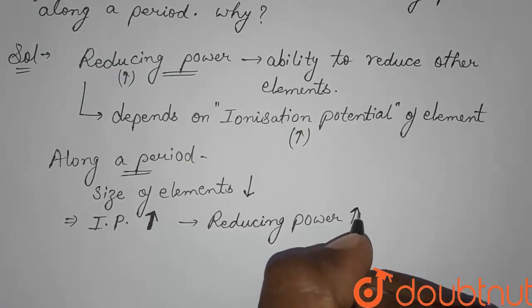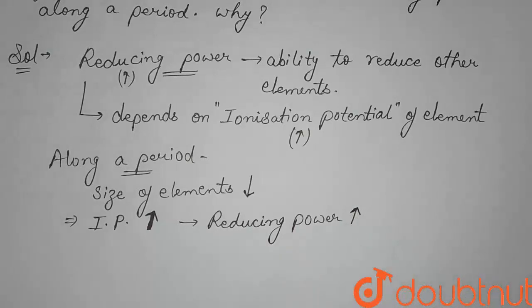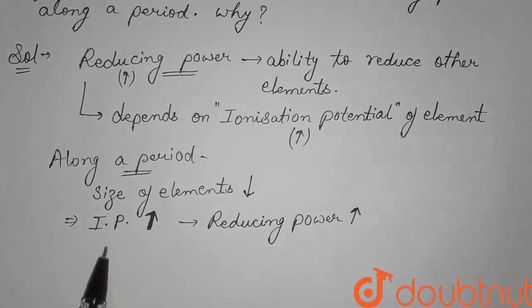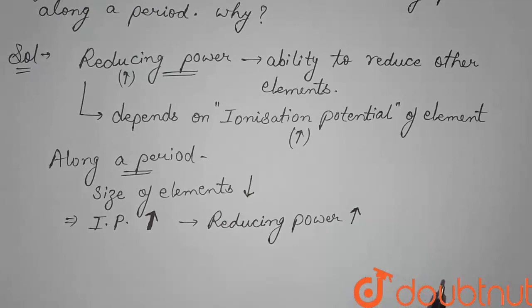Ionization potential is the ability to remove an electron. Reducing power means the ability to reduce others and to oxidize oneself — that means loss of electrons. When loss of electrons is not easily possible because ionization potential values are high, the probability of electron removal is very low, and so reducing power increases. But opposite to this, oxidizing power decreases along a period.